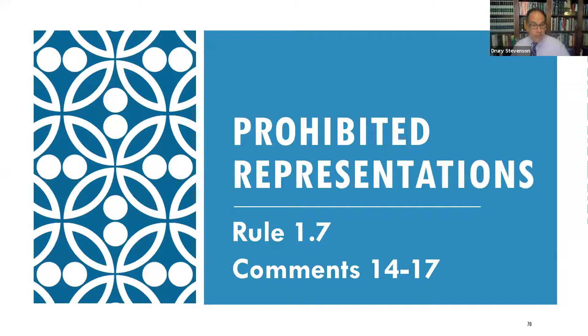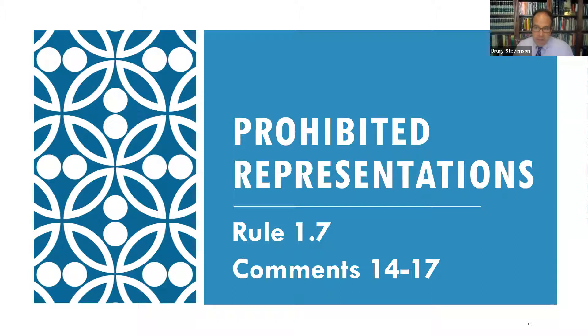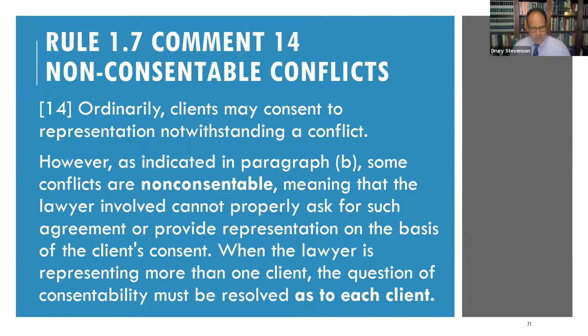The ABA in the model rules has two different types of terms they use for this. One is 'prohibited representations' — that's the section heading to comments 14 through 17 to Rule 1.7. Or throughout the language of the comments themselves and sometimes the model rules, they refer to these with the clumsy word that my spell checker doesn't like: 'non-consentable' — non-consentable conflicts. The ABA spells it without a hyphen, by the way.